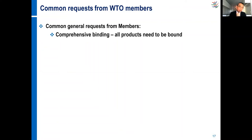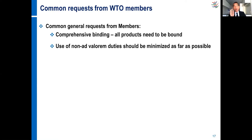It doesn't mean it will be bound at a low rate, but you have to make a commitment on all your products. This will help for transparency and predictability. Binding your duty brings predictability, and economic operators like that — they like economic stability. There is also a common request to limit the use of non-ad valorem duties. What do we mean by non-ad valorem? For ordinary customs duties we say the duty is 5% — that is 5% of the customs value. But in certain cases, countries use a non-ad valorem duty, using a physical unit like liter, number, head, pairs, meter square, or meter cube — such as €2 per meter or $5 per kilo.